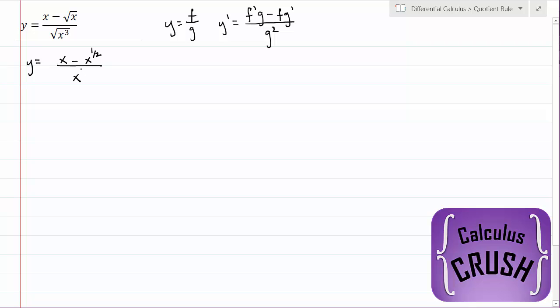So the square root of x is the same thing as x to the power of 1 half. And on the bottom, we have x cubed divided by 2. That's the square root part. So we've rewritten the function.